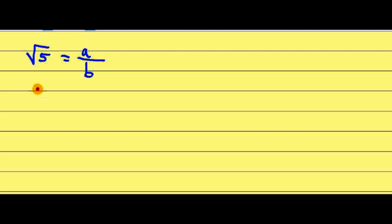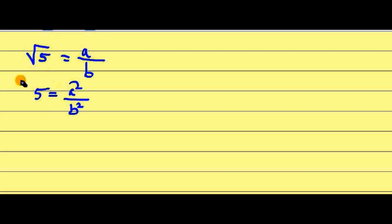Now square this. You will get 5 equals to a² upon b². Take this b² to the left hand side, so you will get 5b² equals to a².